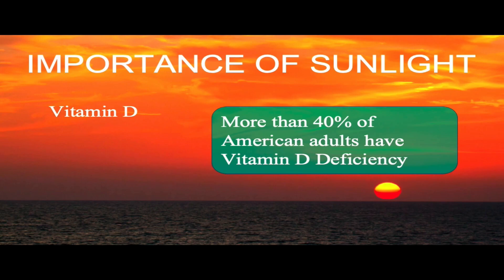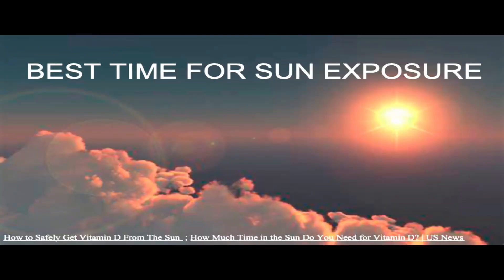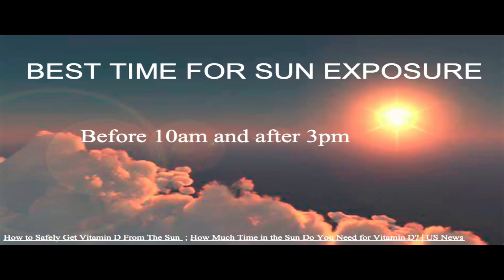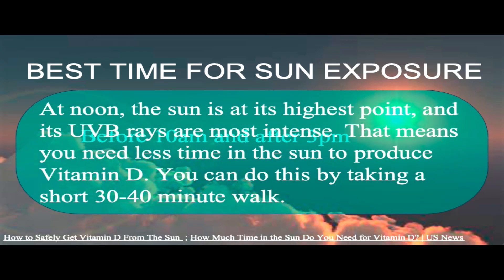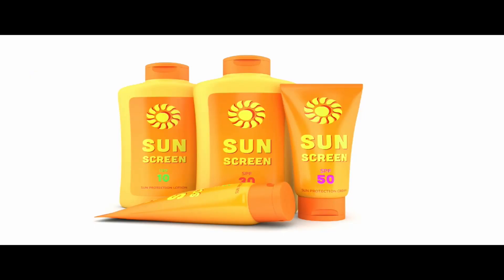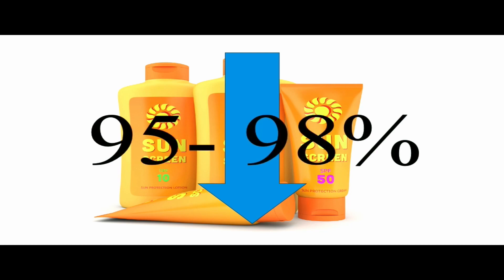More than 40% of American adults have vitamin D deficiency, equal to about 1 billion people worldwide. The best time to go out in the sun is before 10 a.m. and after 3 p.m., because at noon the sun's UVB rays are most intense, so you need less time to produce vitamin D. A short 30-to-40-minute walk, gardening, or sunbathing works well. Note that sunscreen with SPF 30 or higher can decrease your vitamin D production by 90 to 98%, preventing your body from doing what it needs when exposed to sunlight.